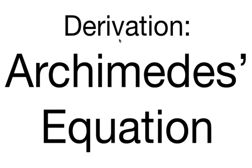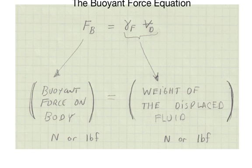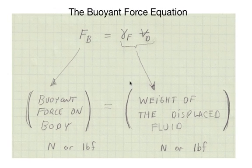Welcome. This video presents a derivation of Archimedes equation, also known as the buoyant force equation. The buoyant force equation tells us that the buoyant force on a body is equal to the weight of the displaced fluid.